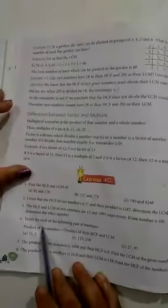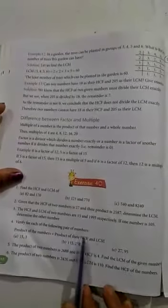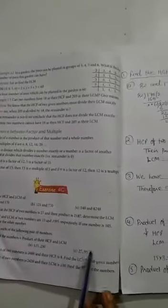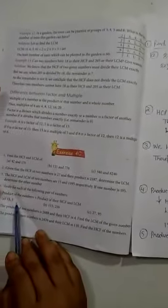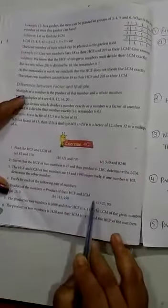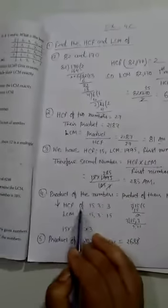Fourth question: verify for each of the following pair of numbers. We have to verify product of the number and product of their HCF and LCM. The product of these numbers and the product of HCF we find and LCM we find.